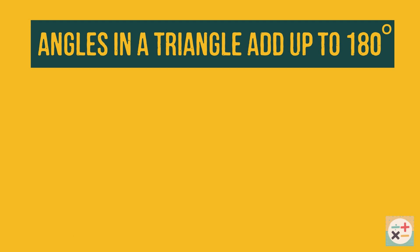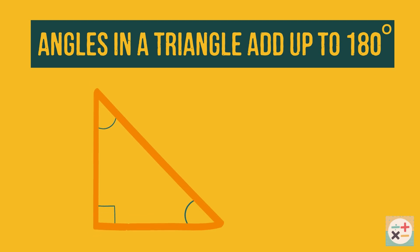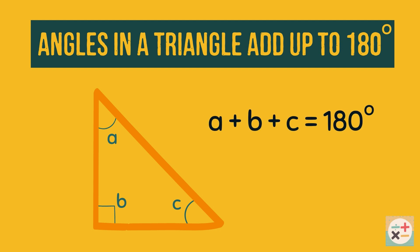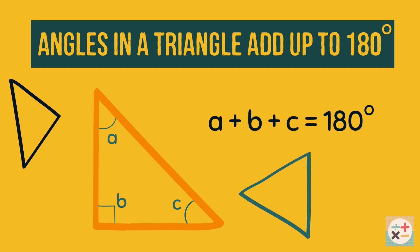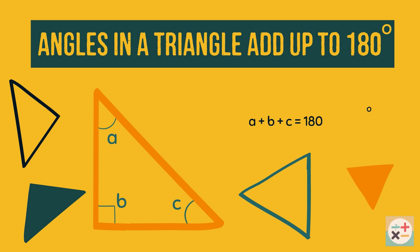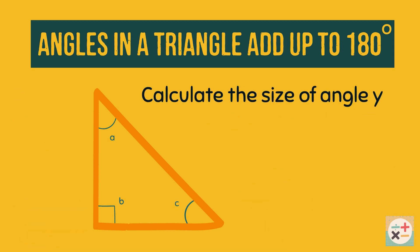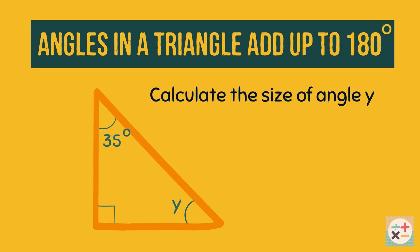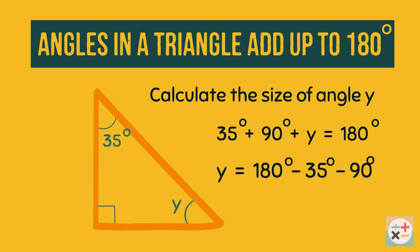The first rule to remember is that angles in a triangle add up to 180 degrees. This is true for any triangle. We can use this fact to work out problems similar to this one, where we have to find the missing angle. Now rearrange the equation to find the answer.